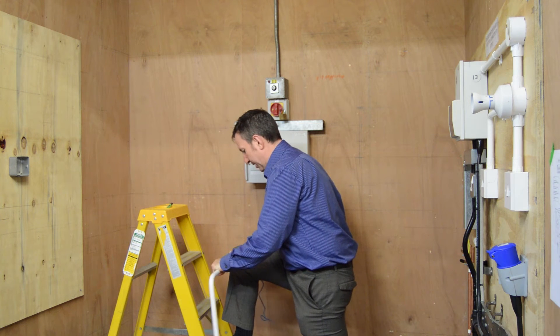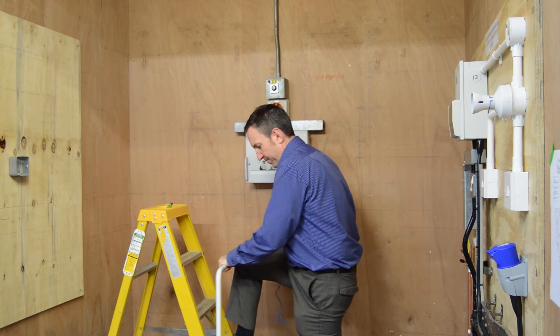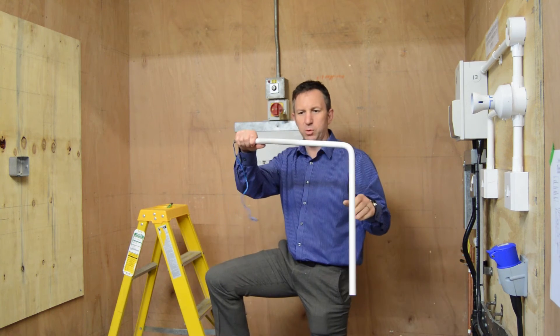We're going to pull back slightly. Keeping it square, keeping it square. So we're going to introduce a slight bend.